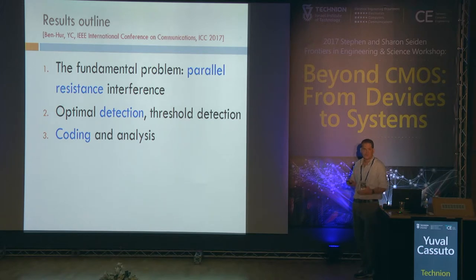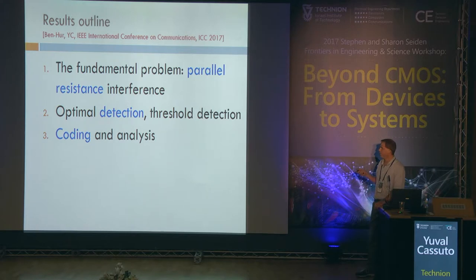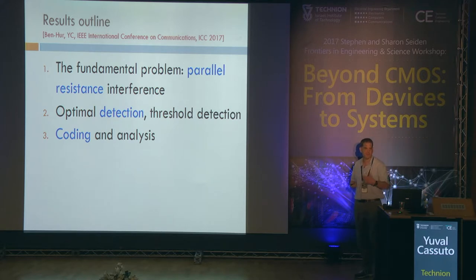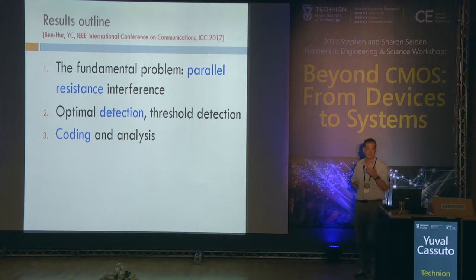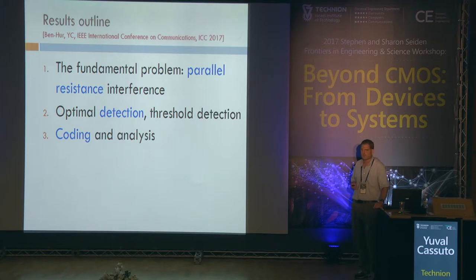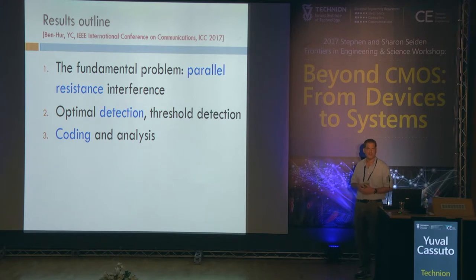More concretely, today I will show three things: first, a fundamental view of the parallel resistance problem — the thing that creates all the issues; second, how to do optimal detection, how to pick a zero or one given the measured readout; and finally, some coding within that framework that improves the sneak path problem.